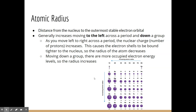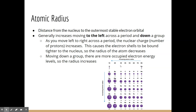As you move down a group, the increasing number of electron energy levels causes the atom to grow larger — because the period number tells us how many energy levels are occupied. In the diagram (showing main group elements only, since transition elements can behave slightly differently), you can see that moving from the noble gases across to the alkali metals, atomic size increases as nuclear charge decreases. And moving down a group, atomic size also increases.